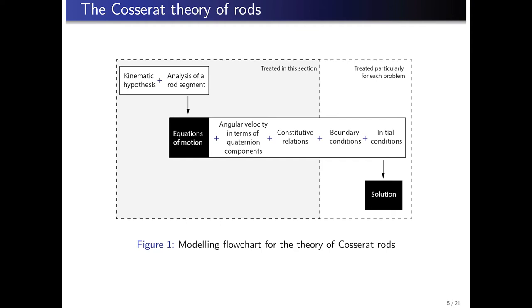The formulation is obtained by following the usual path employed in the field of resistance of materials. First, some kinematic hypotheses are introduced. In our case, we consider that sections behave as rigid bodies during motion. Secondly, the equations of motion, which are the linear momentum balance and the angular momentum balance, are obtained by analyzing a rod segment. Third, a set of constitutive relations is adopted to describe the relation between the kinematic variables and the forces and torques acting on the mechanical system.